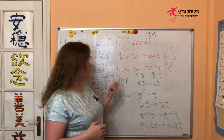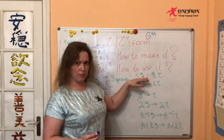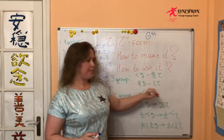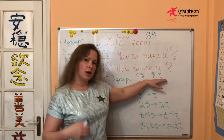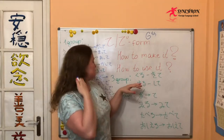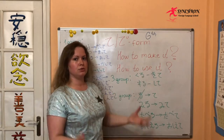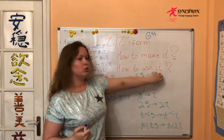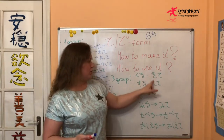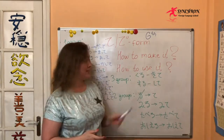The third group — there are only two verbs in the third group of Japanese verbs. For example, 来て (kite) ください — please come. する → してください — please do it. Third group is the easiest: くる → きて (kuru → kite), する → して (suru → shite).